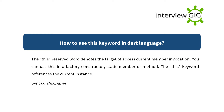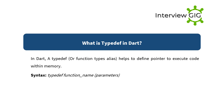How to use the 'this' keyword in Dart? The 'this' reserved word denotes the target of access for the current member invocation. You can use 'this' in a factory constructor, static member, or method. The 'this' keyword references the current instance. Syntax: this.name.